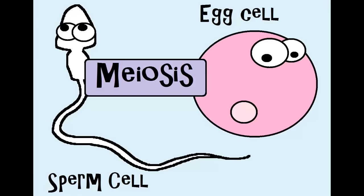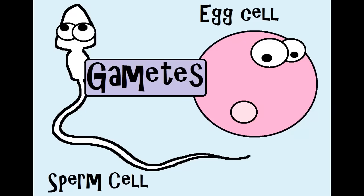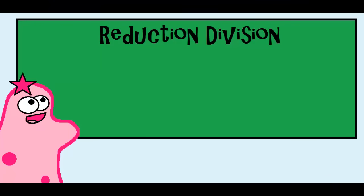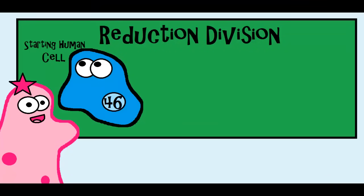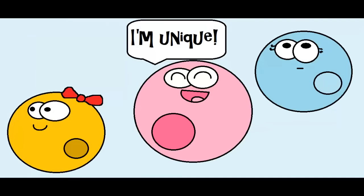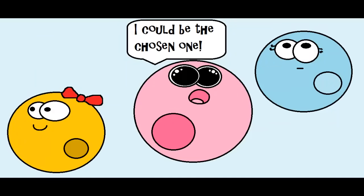Meiosis is all about sperm and egg cells — or, if you want to get fancy, gametes. Meiosis is what we call a reduction division, because you have a starting cell with 46 chromosomes and your ending cells only have 23 chromosomes. So it's reduced — it's a reduction division. And in its production of sperm and egg cells, the cells are going to be all different from each other.